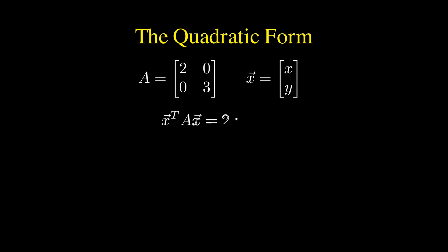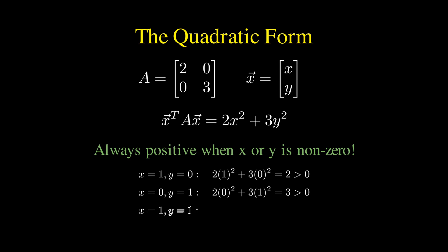So let's unpack what this quadratic form actually means. If we take a simple diagonal matrix A with 2 and 3 on the diagonal and the vector x with components x and y, then x transpose Ax expands to 2x² plus 3y². Notice that this is always positive whenever x or y is non-zero, because we are adding positive multiples of square terms.